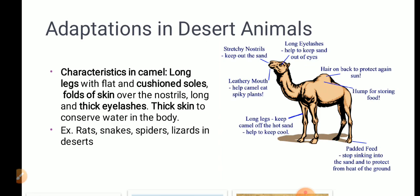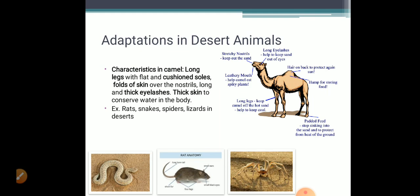We have examples of the rats, the snakes, the spiders, the lizards living in the deserts in deep burrows during the daytime and are active at night. Here you can see the snake, the rat and the spider. They are camouflaged. They can hide themselves from the predators. I hope you all have understood the adaptations of the desert animals.